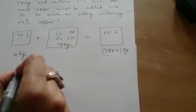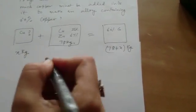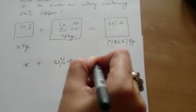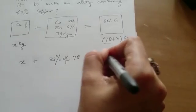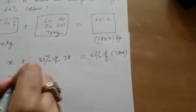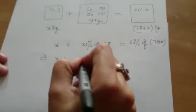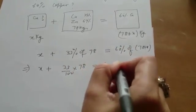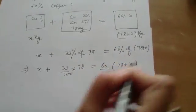And X plus 33% of 78 is equal to 60% of 78 plus X. This implies X plus 33 upon 100 into 78 is equal to 60 upon 100 into 78 plus X. Can you simplify this?